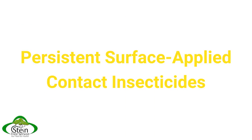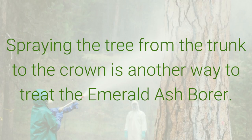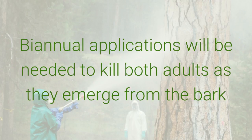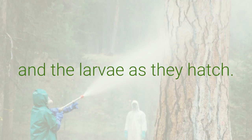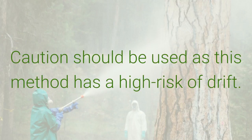Persistent surface applied contact insecticides involve spraying the tree from the trunk to the crown. Bi-annual applications will be needed to kill both adults as they emerge from the bark and the larvae as they hatch. Caution should be used as this method has a high risk of drift.